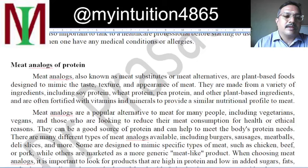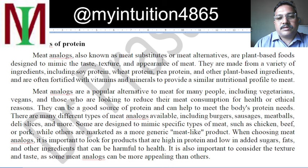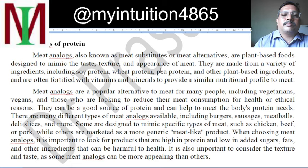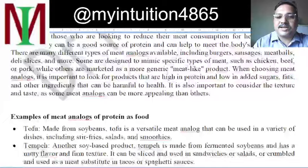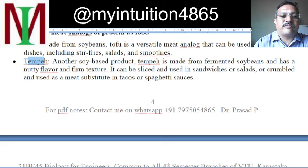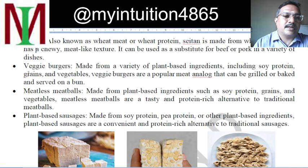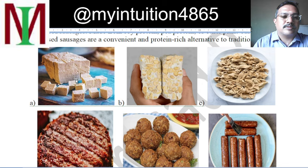Meat analogues are plant-based foods designed to substitute meat — as a meat alternative — mimicking the taste, texture and appearance of meat. Examples include: tofu, tempeh — also a soy-based product — seitan and veggie burgers. Images of these include tofu, tempeh, seitan, veggie burger — mixed with bun and vegetables — meatless meatballs and plant-based sausages.